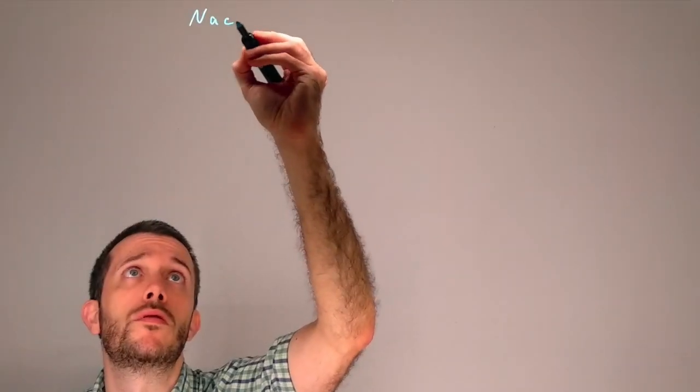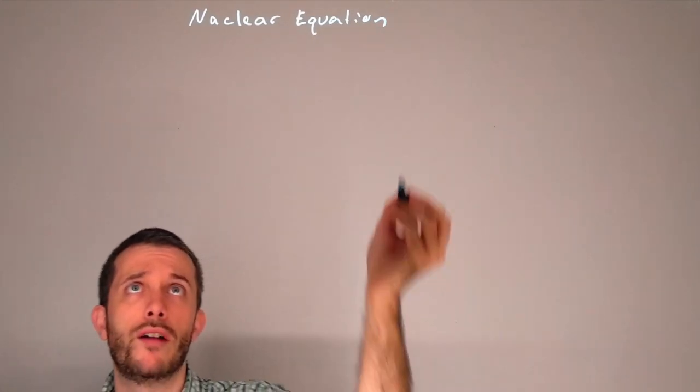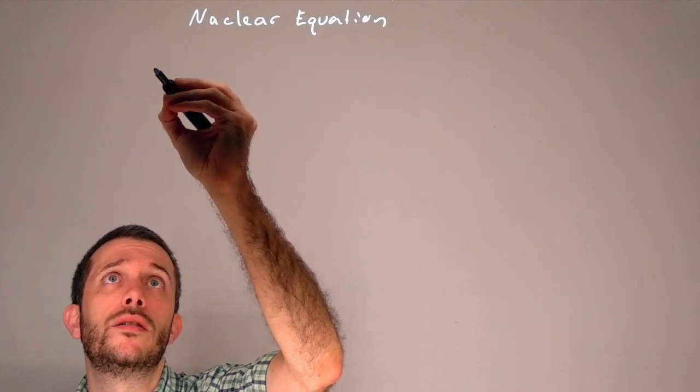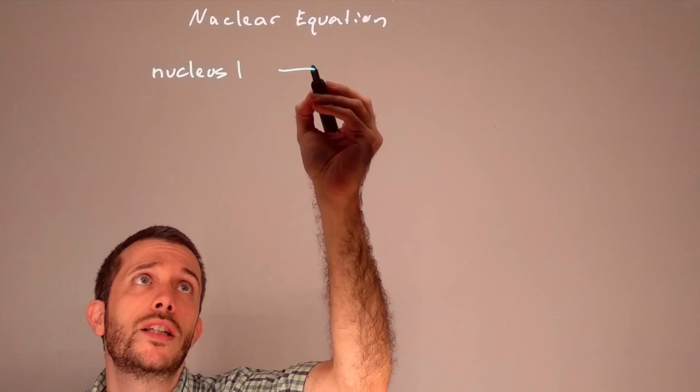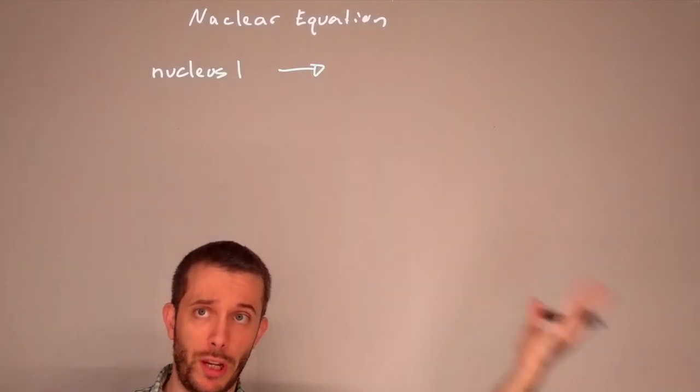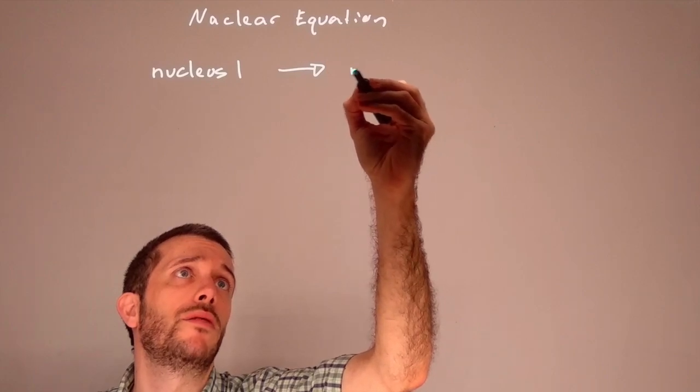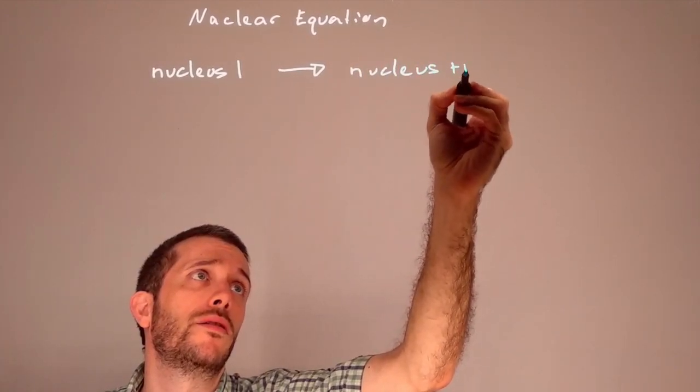Now that process of radioactivity can be described with a nuclear equation. In a nuclear equation, we have on the left side the initial nucleus, and then as we have a chemical equation, we show the direction in which it goes, and then on the right side we have the resulting nucleus and the radiation.